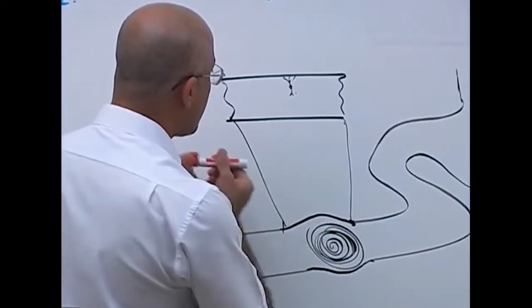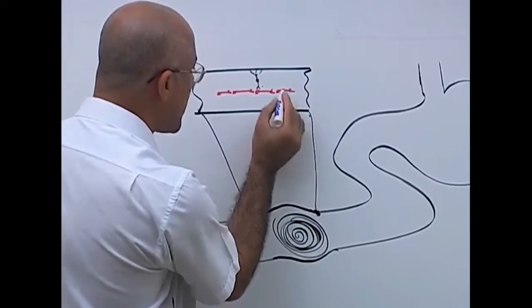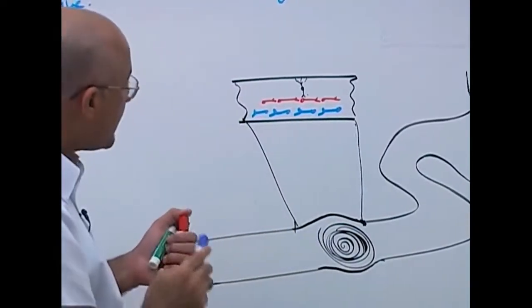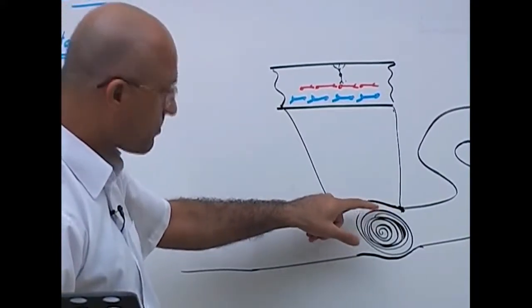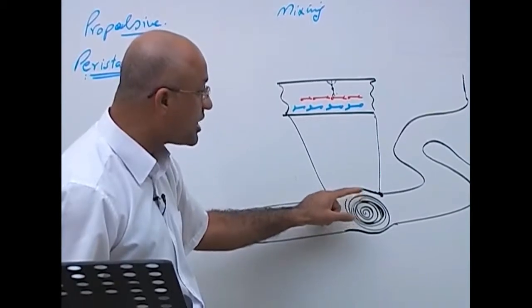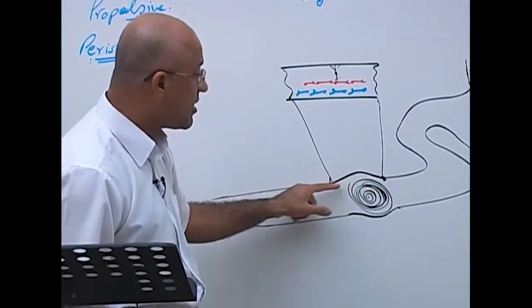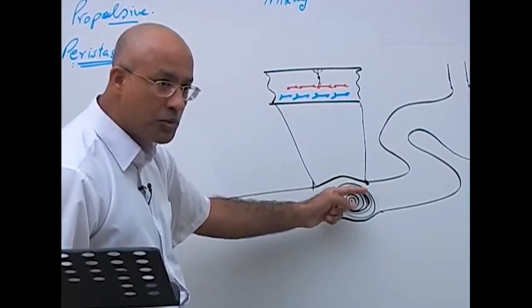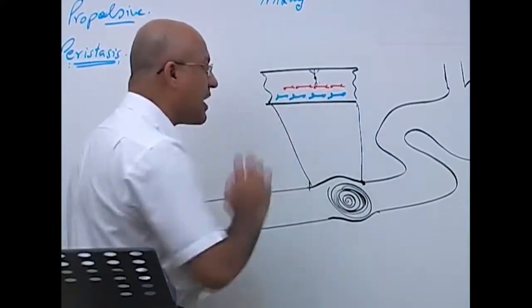As discussed in the previous video, the myenteric plexus has two types of neurons: ascending neurons and descending neurons. The myenteric plexus can be stimulated by stretch in the wall, and also by special chemical substances like amino acids or fats through chemoreceptors in the mucosa, or by irritation to the mucosa. So stimulation can come from mucosal irritation, chemoreceptors, or stretch receptors — all of which stimulate the myenteric plexus.